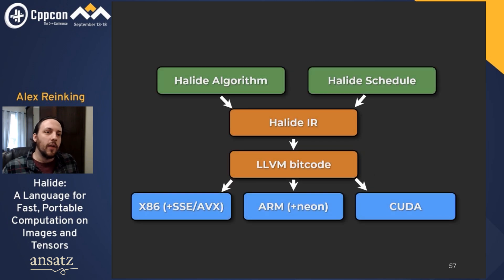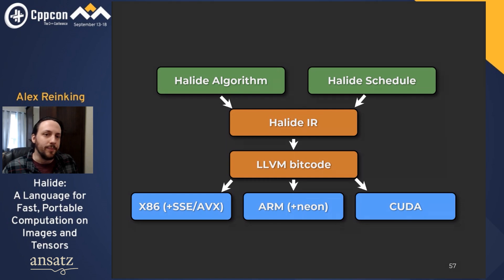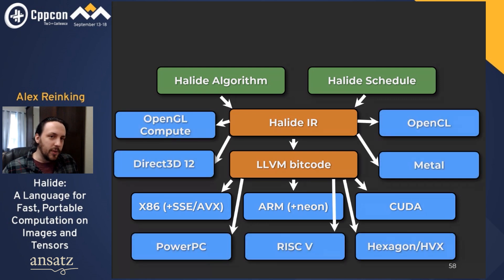Halide leans heavily on the LLVM compiler infrastructure, so you can expect all the good research that's gone into Clang to apply to Halide code as well. We take the Halide algorithm and schedule and combine them into a single function in our intermediate representation. After some optimization passes, this is translated to LLVM's IR to compile to vectorized x86 or ARM code, or to graphs of CUDA kernels with the CPU code required to launch and manage them. We keep adding backends — not all go through LLVM — but at this point if there's a commercial architecture you can think of, we either support it already or it would be easy to add support. Most recently we've been working on RISC-V and Direct3D12 as backends.